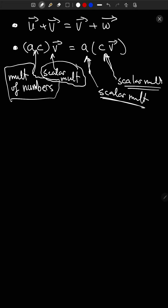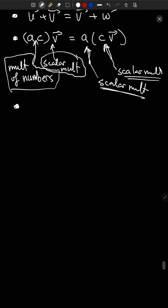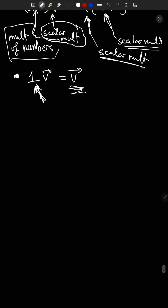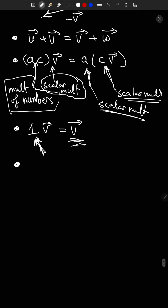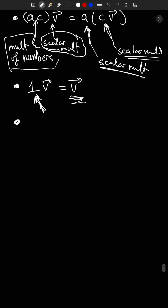Something interesting: I haven't listed 'zero times V equals the zero vector' as a property, because we argued it from the picture. But for fun, using only the listed bullet-point properties — without going to the geometric picture — you can show that zero times V must equal the zero vector. If someone told you they had addition and scalar multiplication satisfying all those properties, zero times V being the zero vector would follow automatically. Maybe a fun exercise to play around with.